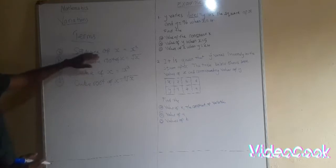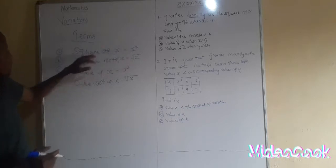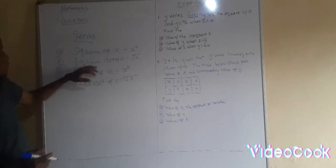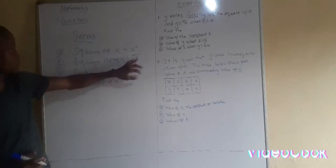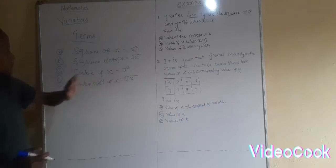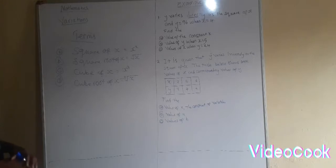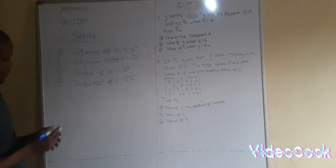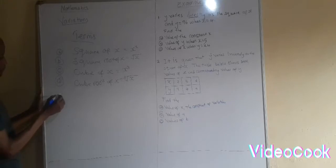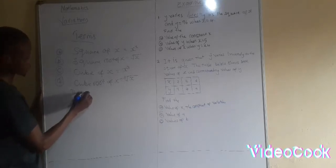So if they say the square of x, it means x squared. The square root of x means you write x inside the root. The cube of x is x to the power three. And the cube root of x is x inside the cube root symbol. When we know about these terms, we have two types of variation — the two common types of variation.